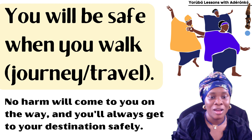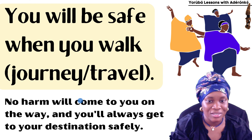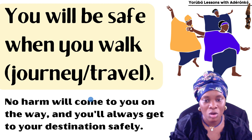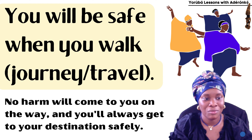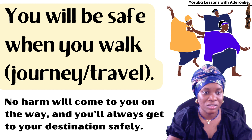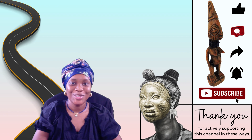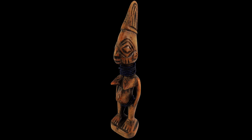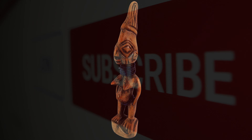We will not walk when there is danger or harm on the road, when it's not safe outside. So when you say that to a person — 'O niri ni joe bimpono' — or even to yourself, I have a video on pronouns that you might want to check out so that you would know how to switch out pronouns. 'Mi o niri ni joe bimpono' — I would not walk on the day that the road is hungry. 'O niri ni joe bimpono' — you will not walk or journey or travel on such days. 'A w niri ni joe bimpono' — we will not walk. And so on. When you say that prayer to a person, it means: no harm will come to you on the way, and you'll always get to your destination safely. You will be safe when you walk, when you journey, when you travel.